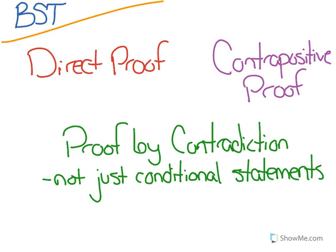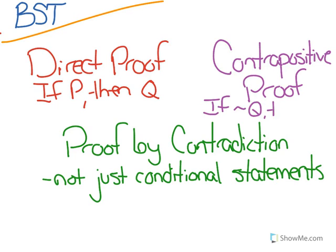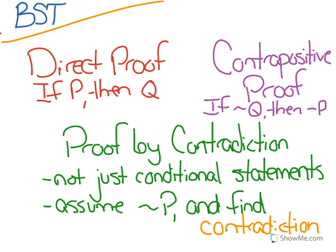so not in the form of an if-then statement. Whereas direct proofs assume if p, then q, and contrapositive proofs assume if not q, then not p, proof by contradiction assumes that a statement is false, not p, and tries to find a contradiction or a flaw in that assumption.